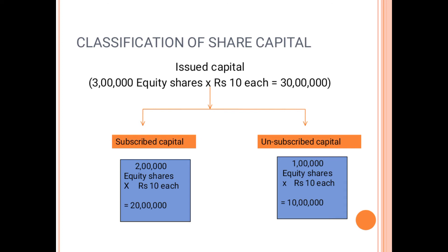The second part of the classification of shares is issued capital. As we have already learned, issued capital is whatever amount the company wants to collect from the public. That issued capital again has two types: subscribed capital and unsubscribed capital.